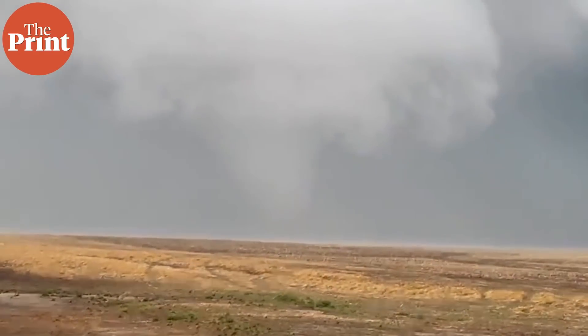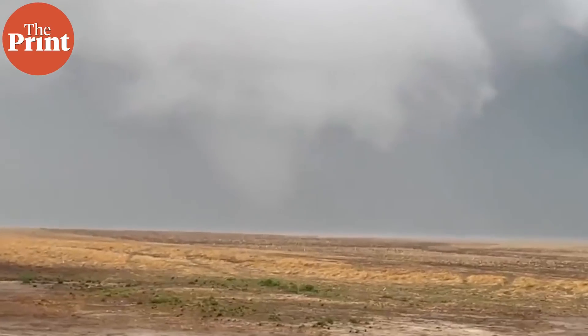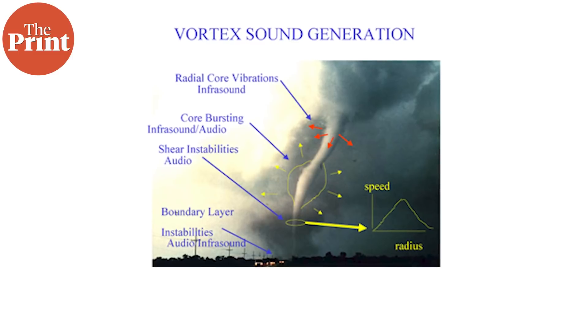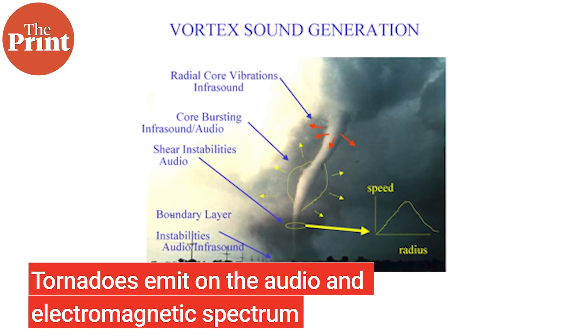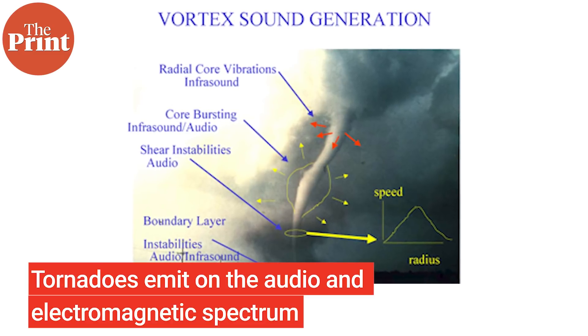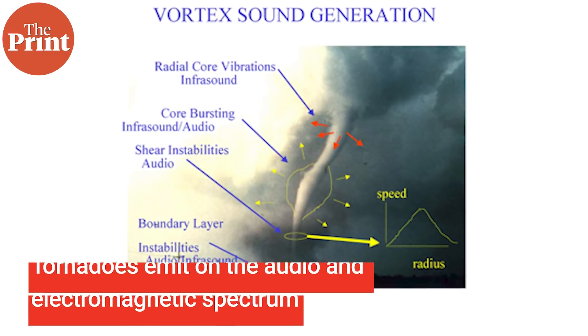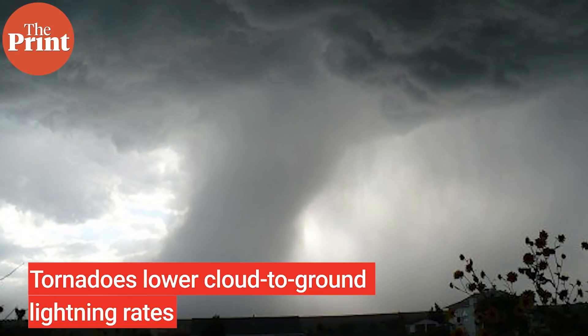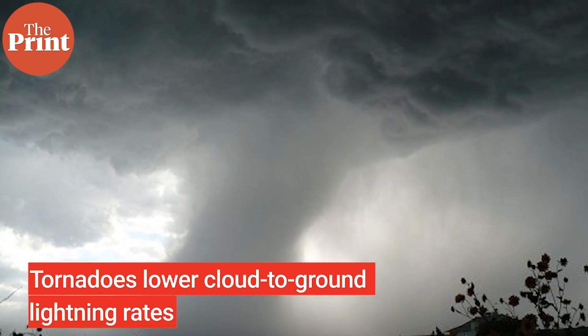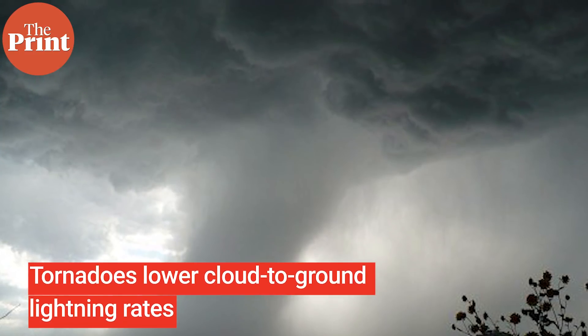They aren't necessarily loud when they're farther away, and it's reported that tornadoes on plains can actually be quite silent until they're very close. Tornadoes also emit a lot of infrasound and they emit on the electromagnetic spectrum. They are not driven by electromagnetic processes or lightning, but they do tend to affect both when they occur. Tornadoes tend to lower the cloud-to-ground lightning strike rates in their clouds and in the regions where they occur.